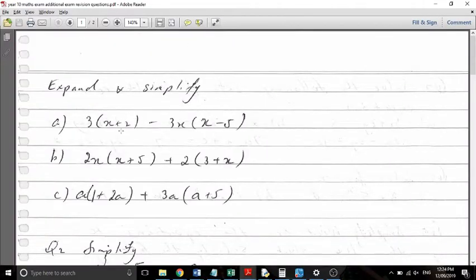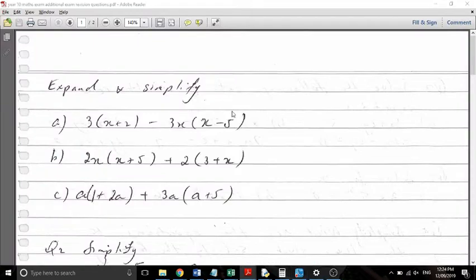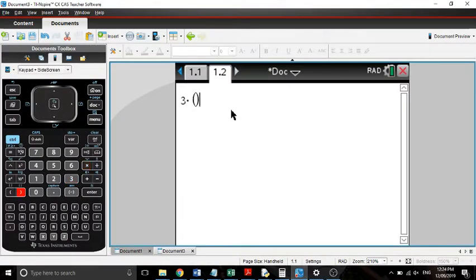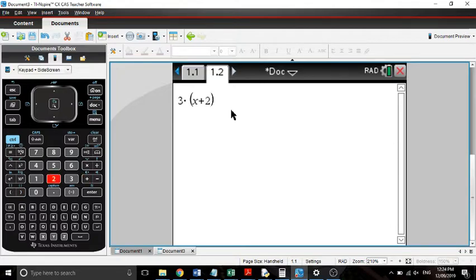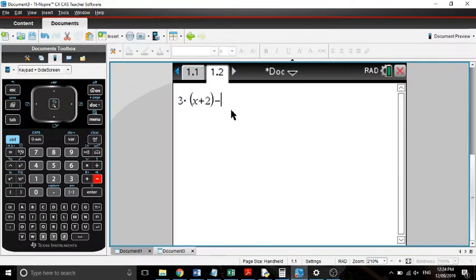Okay, so we've got this thing, 3x plus 2 minus 3x times x minus 5. So what we do is we put that in CAS and we've got to put our multiplication in. So in CAS we'll say we've got 3 times x plus 2, and it will say minus 3 times x times, open bracket, x minus 5. You've got to make sure that you're putting in your times between them, otherwise it won't work.